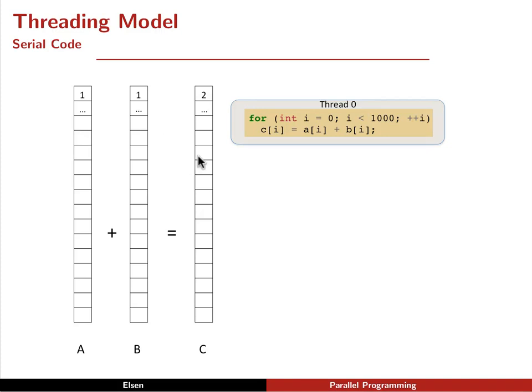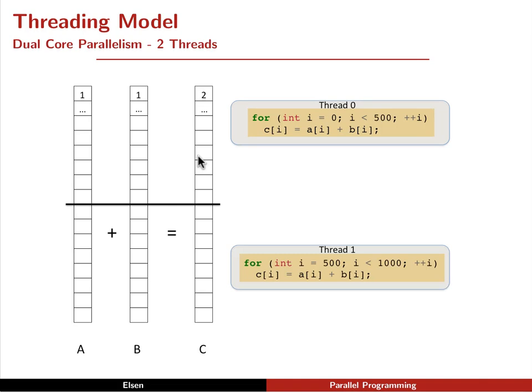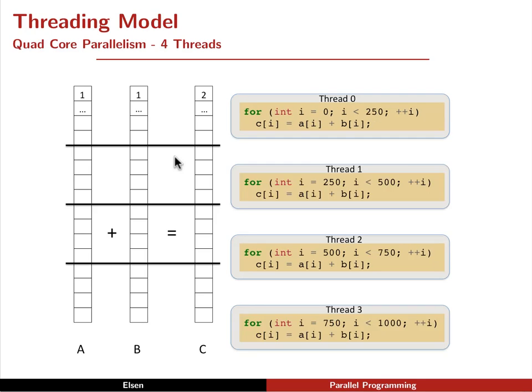Now, if we were to parallelize this with CPU threads, we could add another thread and split the workload in half and have each thread deal with 500 values. And this would work fine if we had a dual-core system. We happen to have a quad-core system. We could split the problem into four parts and have each thread deal with 250 values.